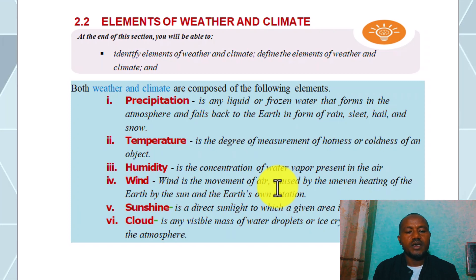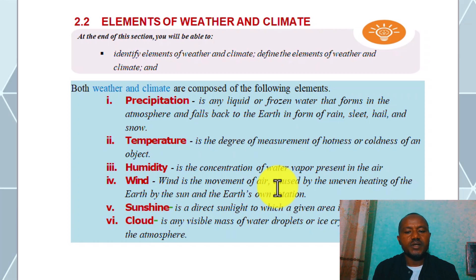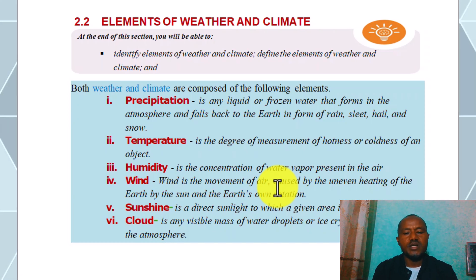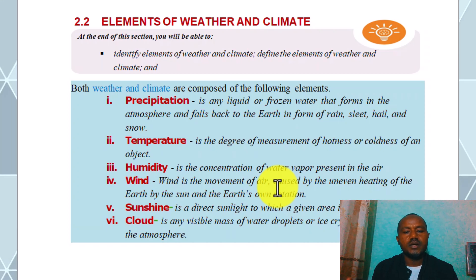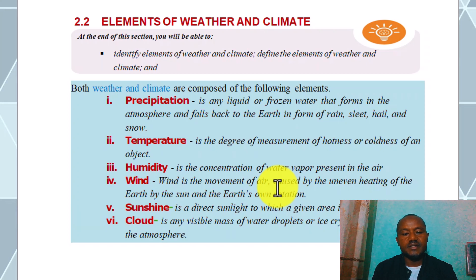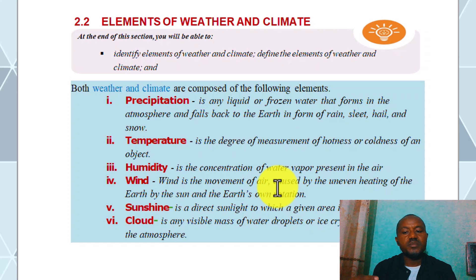What are the elements of weather and climate? Temperature is the degree of measurement of the hotness or coldness of an object. It is the second element of weather and climate. The third element is humidity — the concentration of water vapor present in the air.